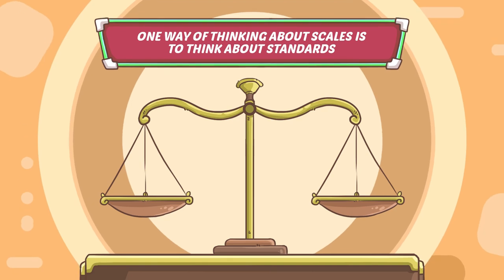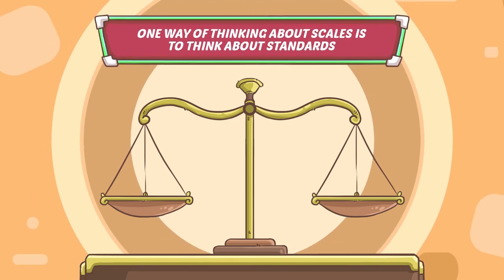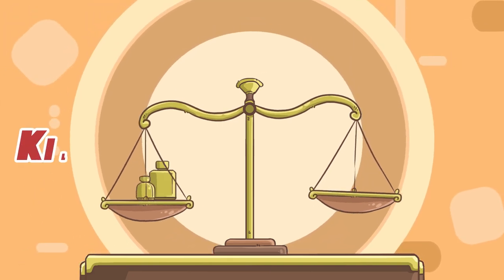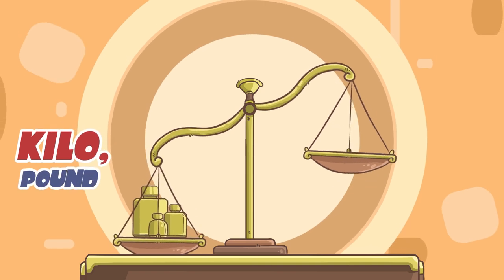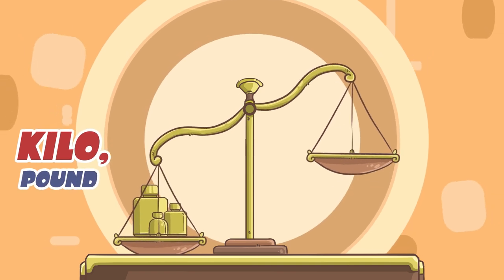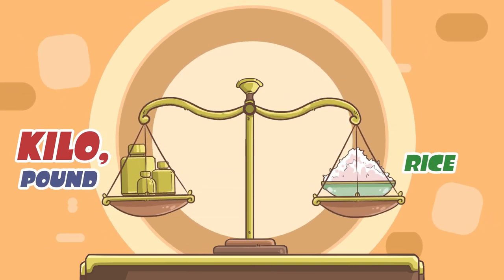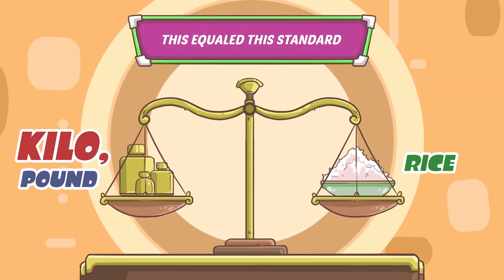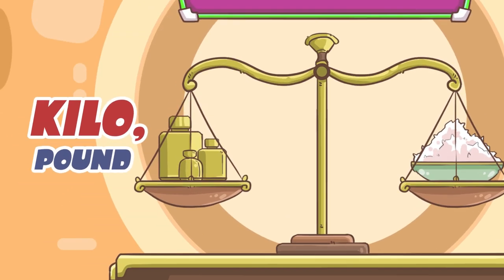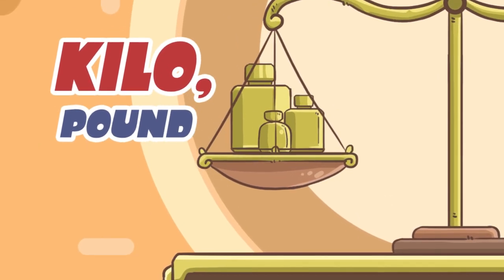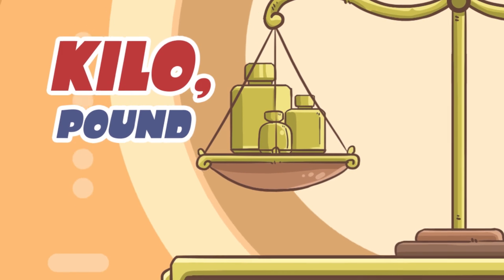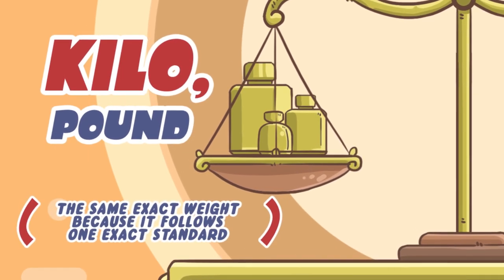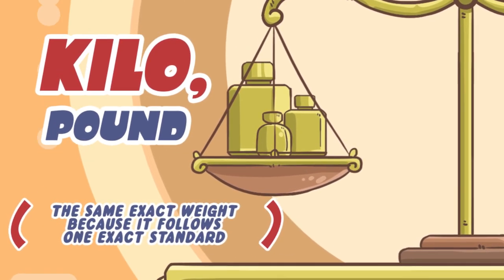One way of thinking about scales is to think about standards. Back in the day, you put a kilo or a pound on one side, then you put the rice on the other side. As soon as they balance out, that means this equaled this standard. That kilo or that pound, wherever you go, is the same exact weight because it follows one exact standard.